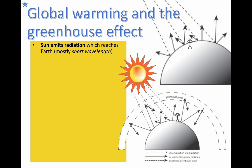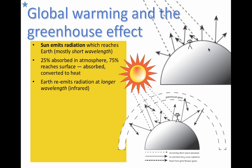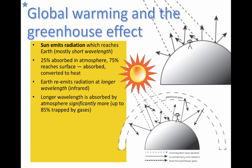So the sun emits radiation which reaches the Earth. It's mostly short wavelength or UV radiation. About 25% of it gets absorbed up in the atmosphere and 75% actually reaches all the way to the surface of the Earth. It gets absorbed and then it's converted into heat energy. This heat energy is longer wavelength — it's infrared radiation — and this is what starts to heat up the atmosphere. The Earth re-emits that energy as longer wavelengths, with arrows pointing back from the Earth.